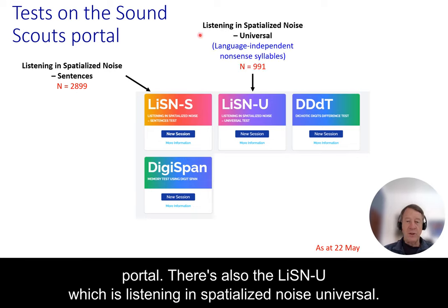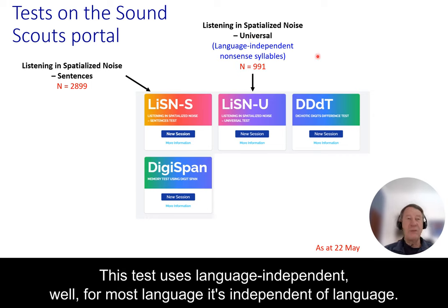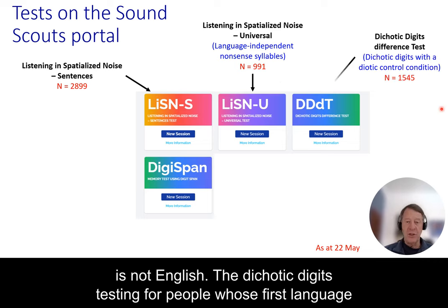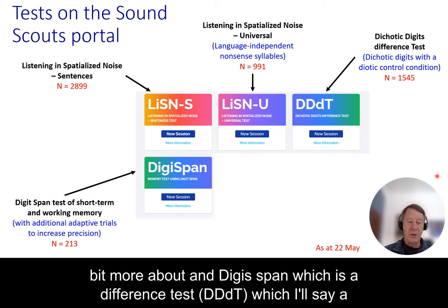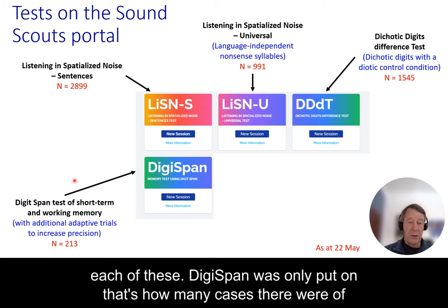LiSN-S is not the only test on the portal. There's also LiSN-U — Listening in Spatialized Noise Universal — which uses language-independent nonsense syllables, opening up testing for people whose first language is not English. There's also the Dichotic Digits Difference test, and DigiSpan, which is a test of working memory. A week or two ago when I downloaded the data, those were the case counts for each of these tests.